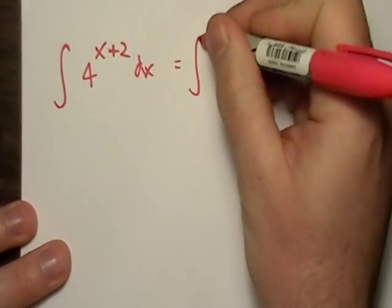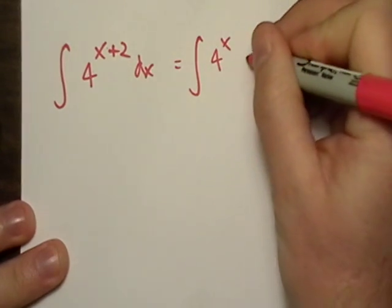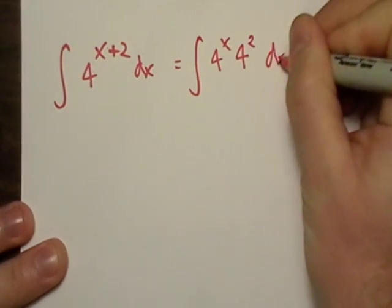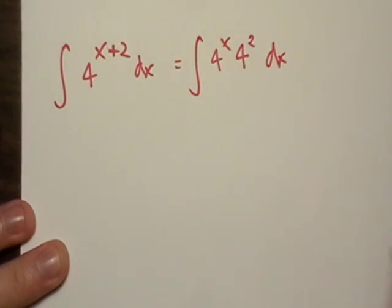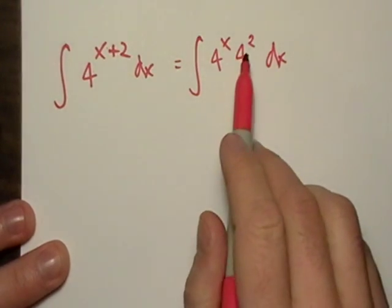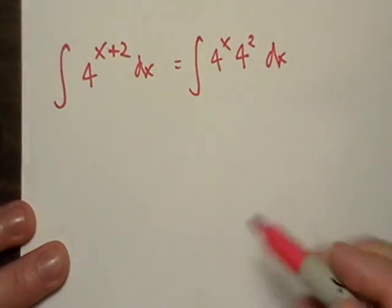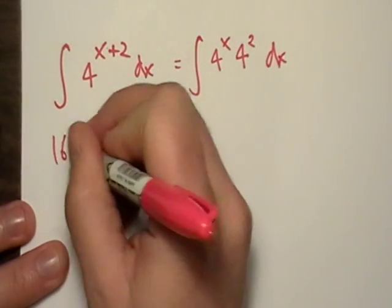First thing I'm going to do is use my algebra exponent rules. I'm just going to break it up because if I have like bases, I can just add the exponents. It turns out when we do that, I get four squared. That's 16, so I can just yank that out of there. That's a constant.